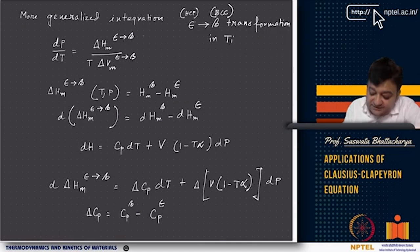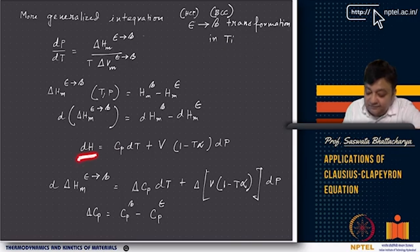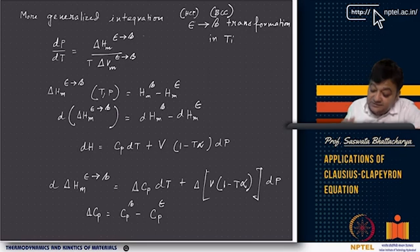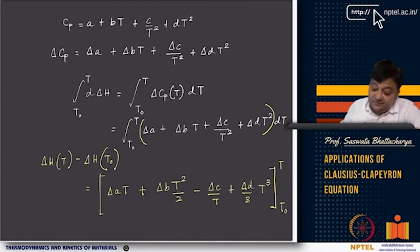If we differentiate delta H_m, we get D(delta H_m) = D(H_m^beta) − D(H_m^epsilon). This comes from applying Maxwell's relations and further simplification.